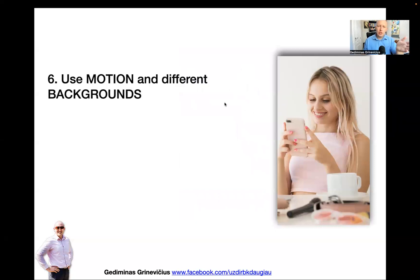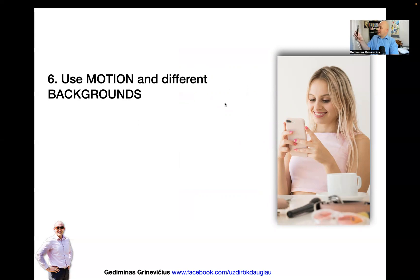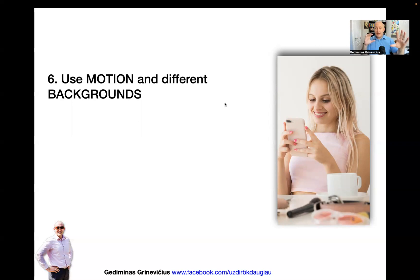Number six: use motion and different backgrounds. You don't need to do the entire one-minute video holding your phone in the same position. You could do a sentence this way, then that way, then change the angle. Think about movies or news programs — every couple of seconds they change the camera angle to keep you engaged, because it would be super boring if the whole time the camera was just straight at the actors.